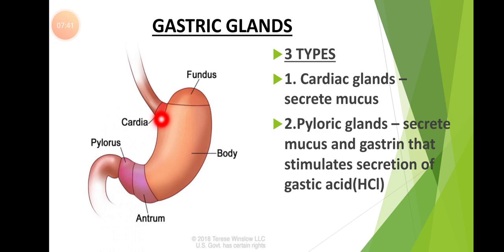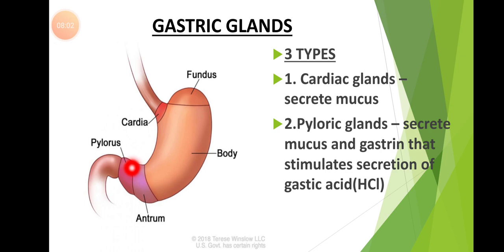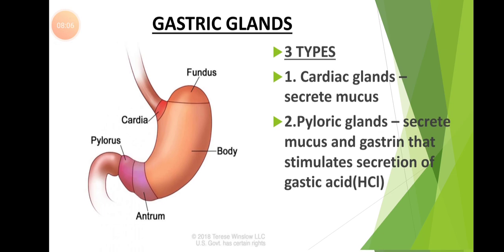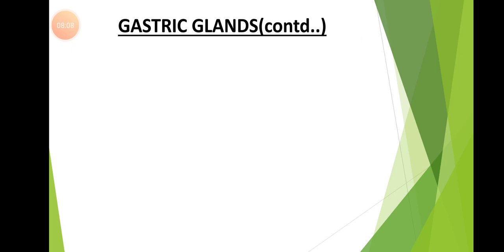Cardiac glands secrete mucus. All three types of glands secrete mucus. The pyloric glands secrete mucus, and along with this mucus they also secrete gastrin. This gastrin stimulates the secretion of gastric acid — particularly HCl.